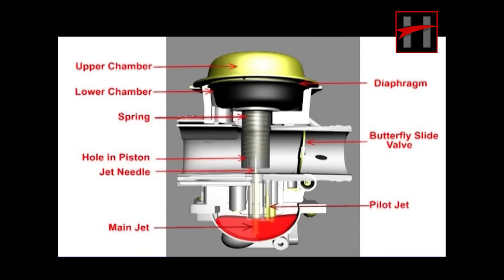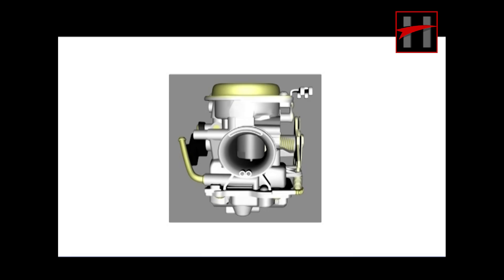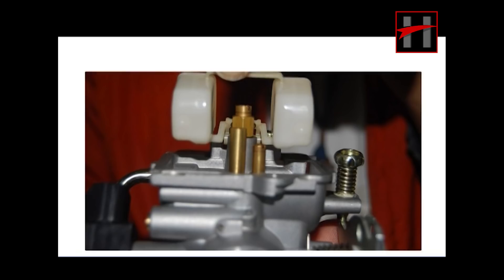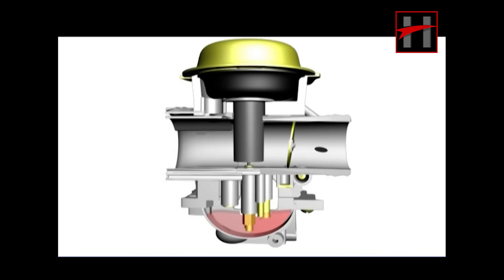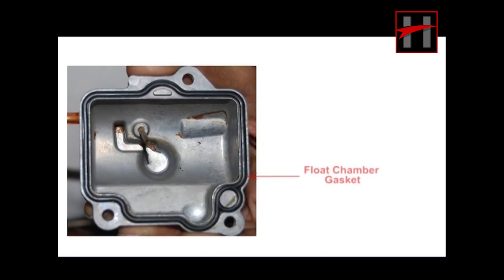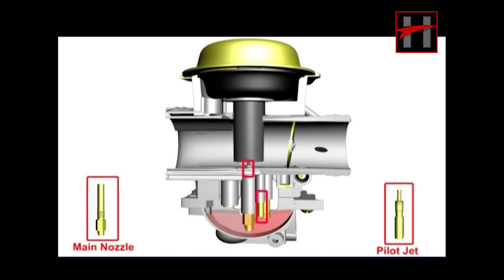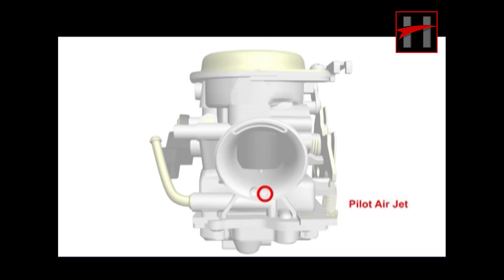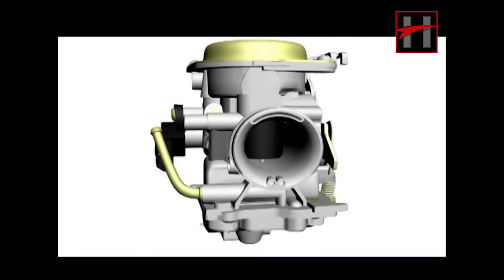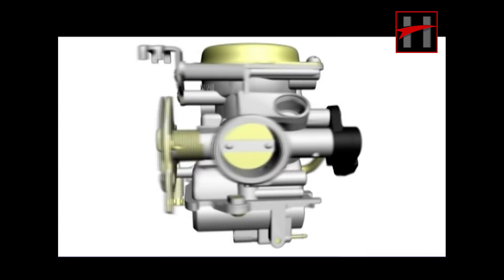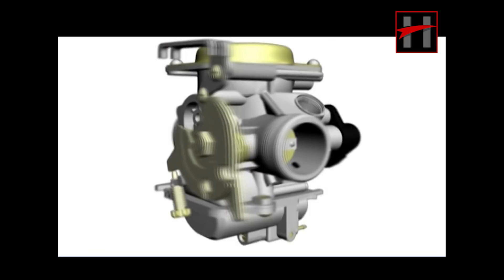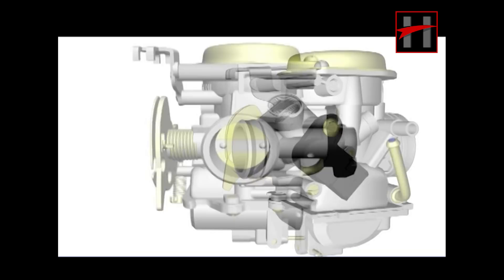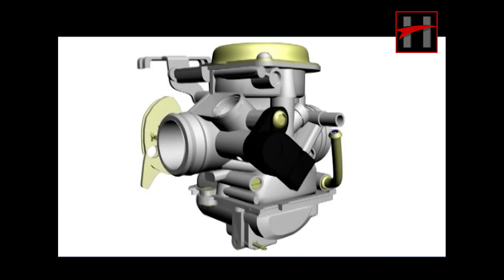The components of a BS type carburetor are: cover, diaphragm, spring, piston valve, jet needle set, piston valve with diaphragm, float assembly with pin, float chamber, float chamber gasket, pilot jet, main nozzle, starter jet 1, starter jet 2, pilot air jet, main air jet, butterfly slide, starter plunger set, throttle stop screw assembly, pilot screw assembly, and throttle position sensor.